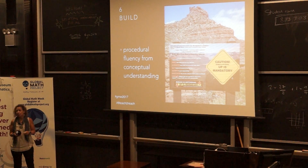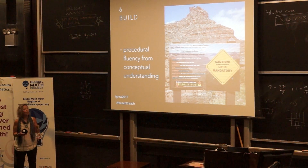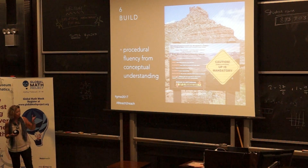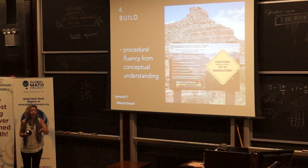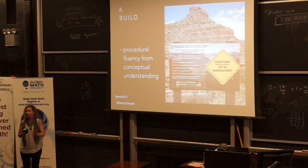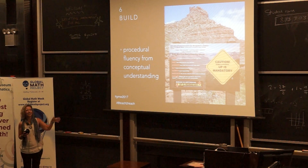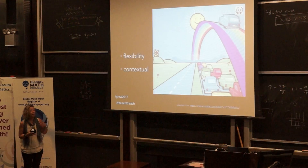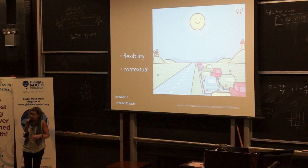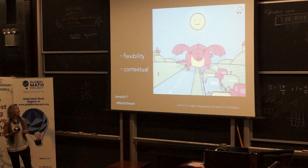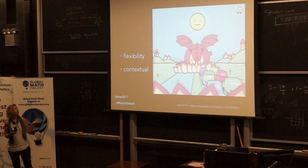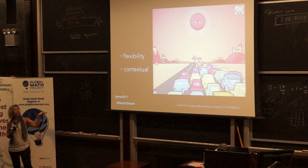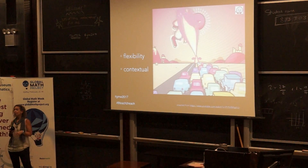Procedural fluency from conceptual understanding — this one's tough. But if you look at this map on the sign of the Grand Canyon, you can just hike down, which I would not recommend, or take the time to understand all the things ahead of you. When students have procedural fluency from conceptual understanding, they're more flexible, they see things in context, and they're prepared for some unusual traffic events.